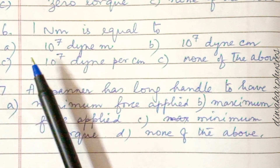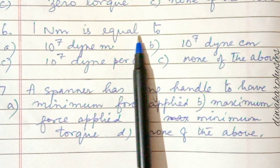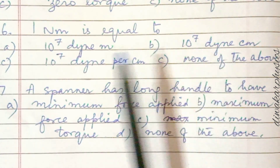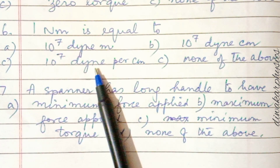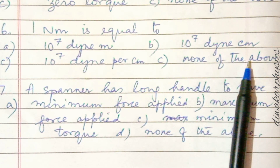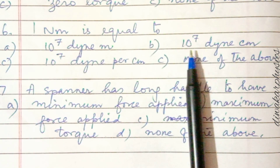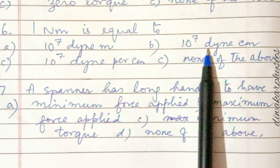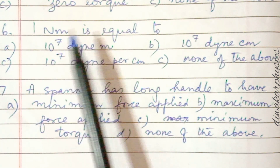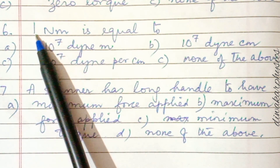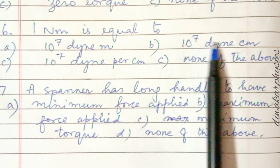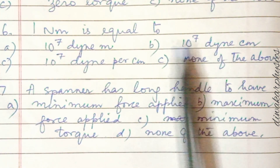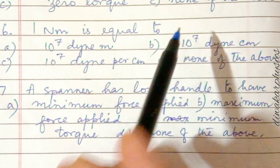Question six: one newton meter is equal to — 10 to the power 7 dyne meter, 10 to the power 7 dyne centimeter, 10 to the power 7 dyne per centimeter, or none of the above? You can remember this relation: the answer is option B, which is 10 to the power 7 dyne centimeter.